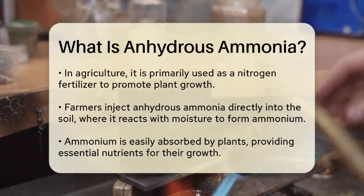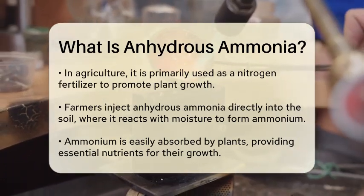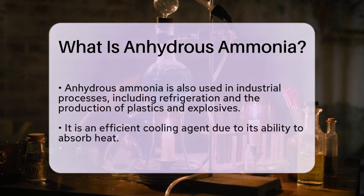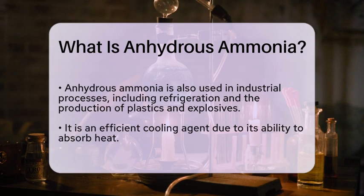In addition to its agricultural uses, anhydrous ammonia is also utilized in various industrial processes. It serves as a refrigerant in cooling systems and is involved in the production of plastics, explosives, and other chemicals. Its ability to absorb heat makes it an efficient cooling agent, which is why it is favored in many industrial applications.